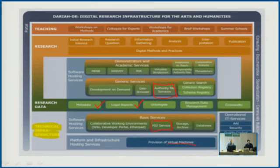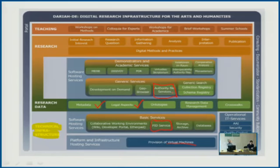From my point of view, these workshops and summer schools show that all those modules you can see on this graphic are interconnected. If you want, you can choose just a single one. The authority file service may help during your research process, or you just want to visualize something with a geo-browser. You can access all those tools via the DARIAH-DE infrastructure for free, and the code is available open source. But there are many interconnections among all those modules.